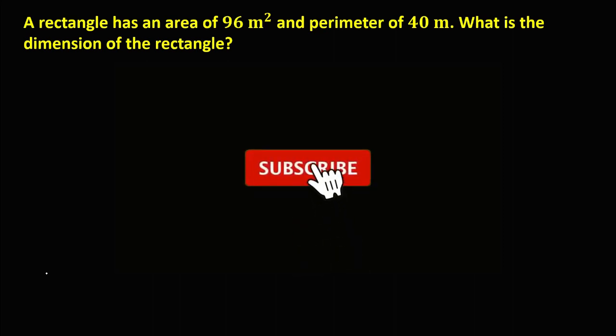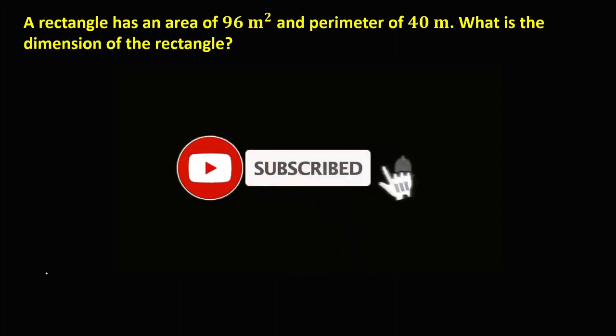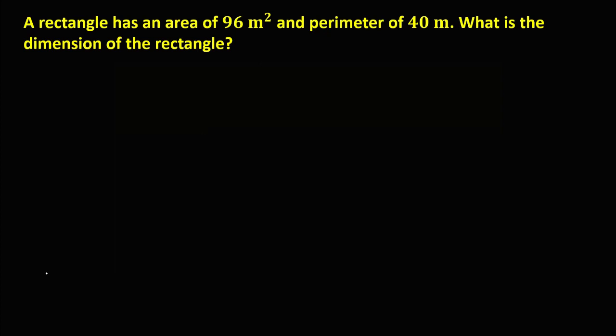Okay, so let's have this problem. A rectangle has an area of 96 meters squared and a perimeter of 40 meters. What is the dimension of the rectangle?